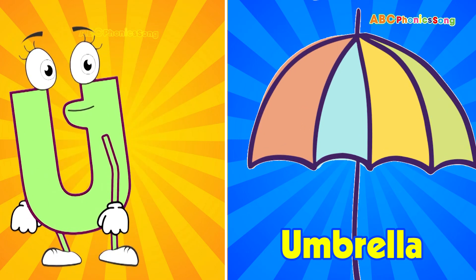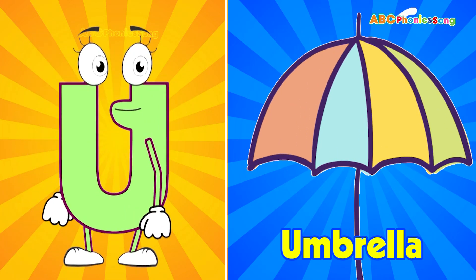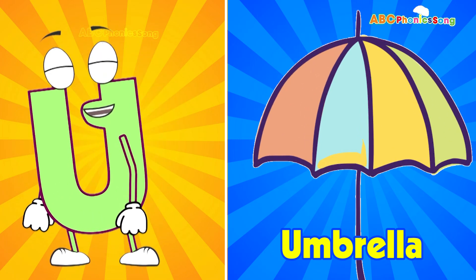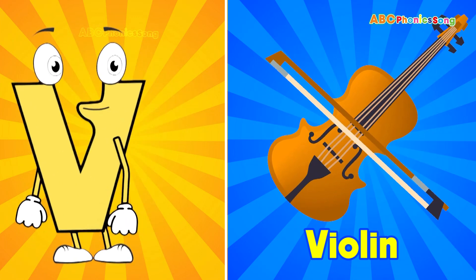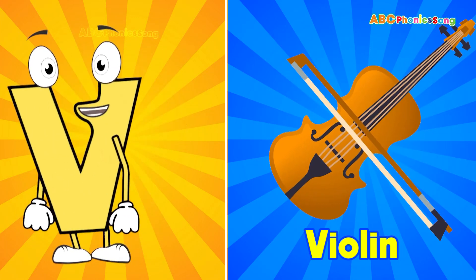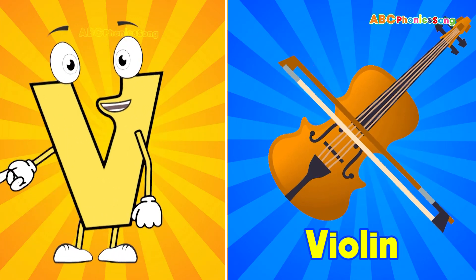U is for umbrella, u-u-umbrella. V is for violin, v-v-violin.